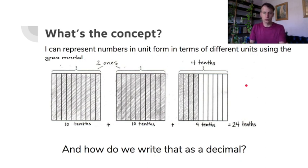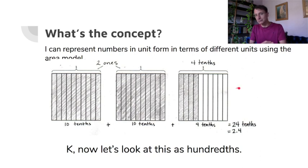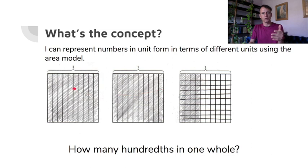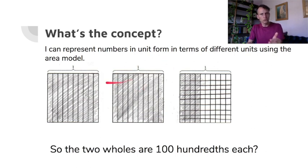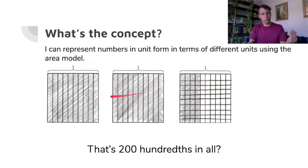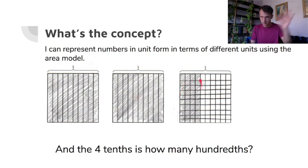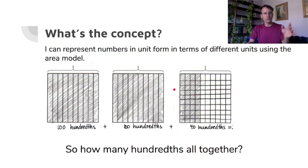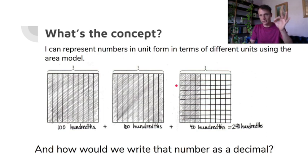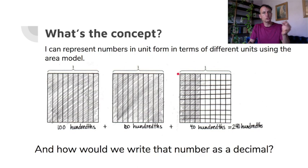How do we write that as a decimal? 2.4. Now let's take that same area model and make it hundredths. Two holes are 100 hundredths each — a grand total of 200 hundredths, just like two dollars is 200 pennies. The four tenths from before: how many hundredths is that? 10, 20, 30, 40 — 40 hundredths. So how many hundredths all together? 200 plus 40 is 240 hundredths. Those are cents — 240 pennies is two dollars forty cents.